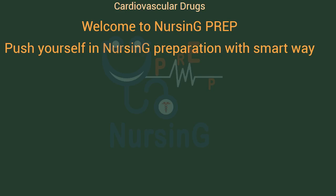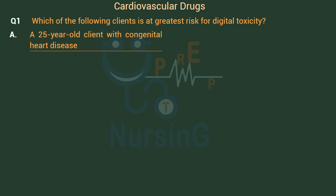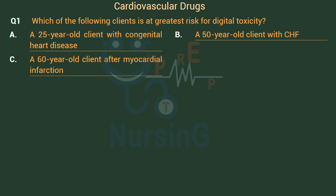Cardiovascular Drugs. Which of the following clients is at greatest risk for digoxin toxicity? Option A: A 25-year-old client with congenital heart disease. Option B: A 50-year-old client with CHF. Option C: A 60-year-old client after myocardial infarction. Option D: An 80-year-old client with CHF.